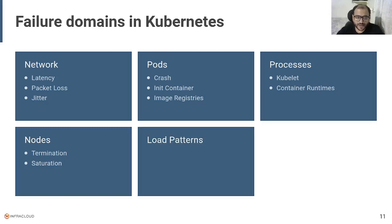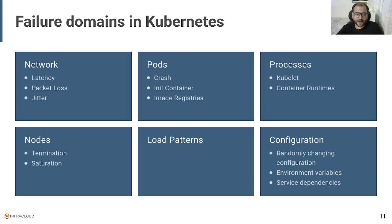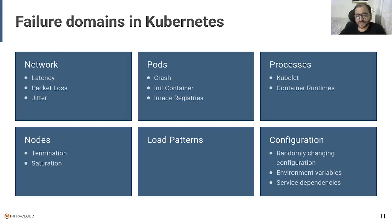There might be issues with nodes like abrupt termination, resource saturation in terms of compute or storage, and disk full errors. Then there is the issue of load patterns — you need to test your system with bursty or spiky load patterns to understand system behavior under those loads. Lastly, we can categorize configuration or human errors like randomly changing configurations, environment variables, or service dependencies where a particular service is not able to resolve that dependency. This is how we can categorize failure domains inside Kubernetes and accordingly create chaos for the system.